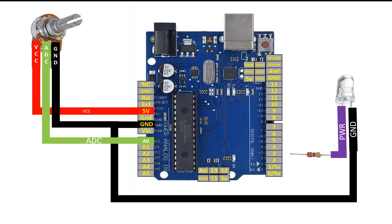I'll use a 220 ohm resistor — it's an ideal value. Connect the longer pin to one end of the 220 ohm resistor. From the other end, connect it to any available PWM pin. The Arduino Uno has six PWM pins marked with a tilde (~) symbol — pins 3, 5, 6, 9, 10, and 11. I'll connect it to pin number 3. This completes our connection.